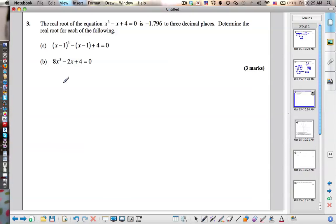Alright, the first. The real root of this equation is negative 1.796 to three decimal places. Determine the real root of the following. Okay, you see here, there's the x cubed minus x plus 4, and you see this is basically the same thing except we added in an x minus 1 instead of the x.